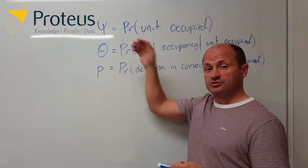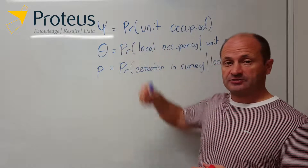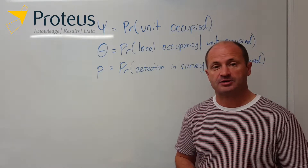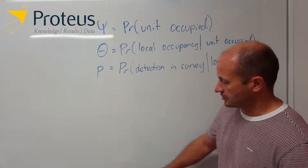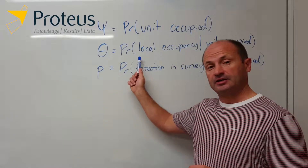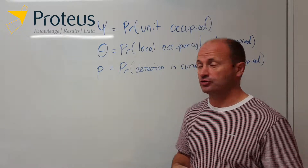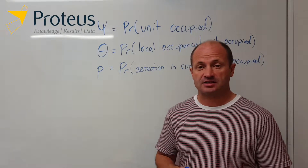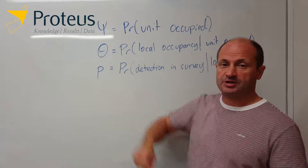This is the basic structure: we've got three levels of sampling and three parameters to deal with. Exactly what each of these mean is different in different applications. People sometimes ask how they have to get their data formatted and set up to do such an analysis using program PRESENCE, which is what I'll focus on. The key thing when setting our data up is thinking about the theta parameter — the probability of local occupancy — because what scale we interpret it at can be different in different situations. Even for the same data set you might set your data up slightly differently to ask slightly different questions about theta.